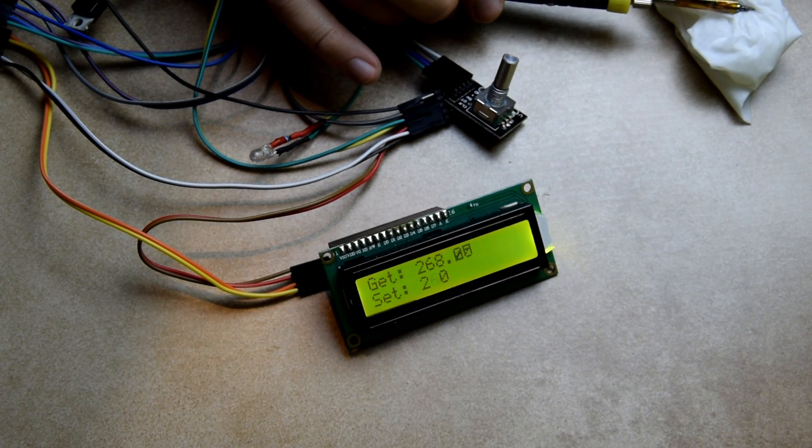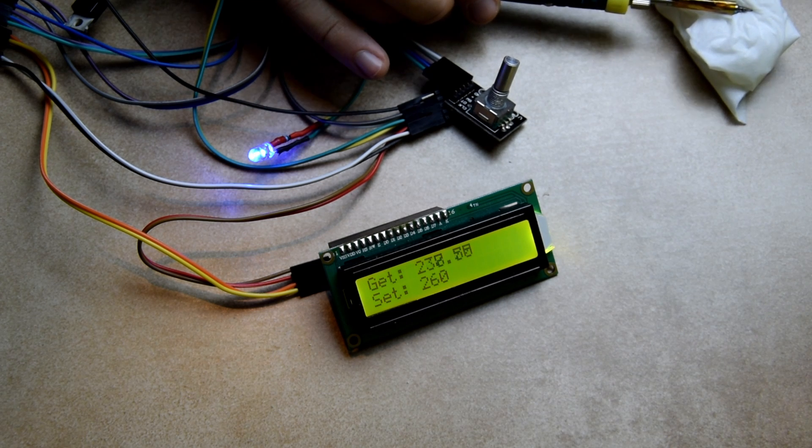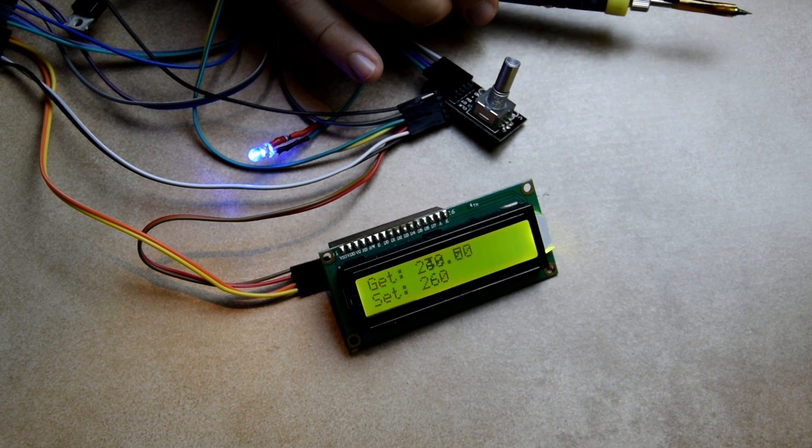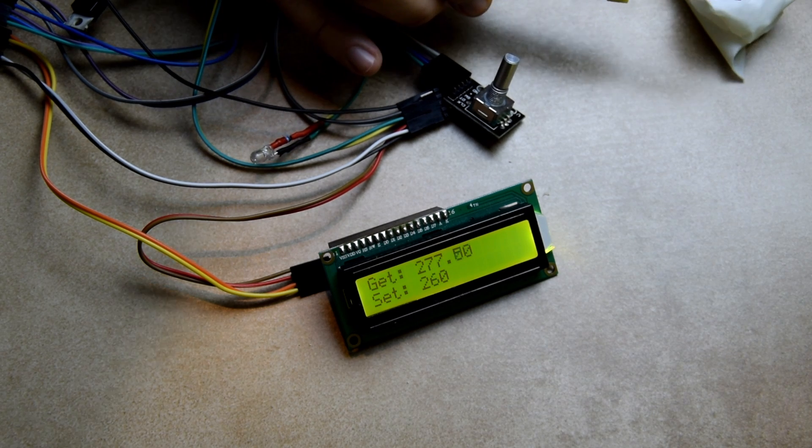After adding a basic pre-regulator for the output, we can see that the iron reaches the set temperature and keeps it relatively well. Thanks to active regulation, we can now increase the supply voltage to increase the power and make temperature recovery faster.